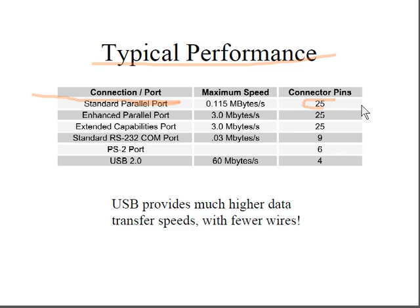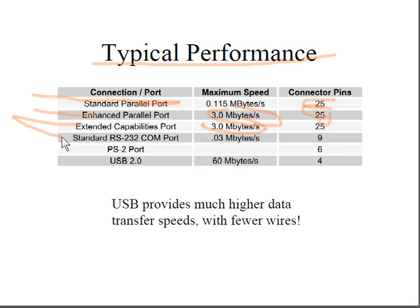The Enhanced Parallel Port had a speed of 3 megabytes per second with 25 pins. The Extended Capabilities Port was also 3 megabytes per second with 25 pins. The standard RS-232 COM port had a speed of 0.03 megabytes per second with 9 pins. The PS/2 port used 6 pins.